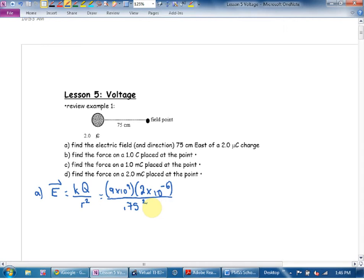What do you get? Remember, we said electric fields are usually in the thousands or tens of thousands or even hundreds of thousands. What do you get? 32,000? Units. Units.